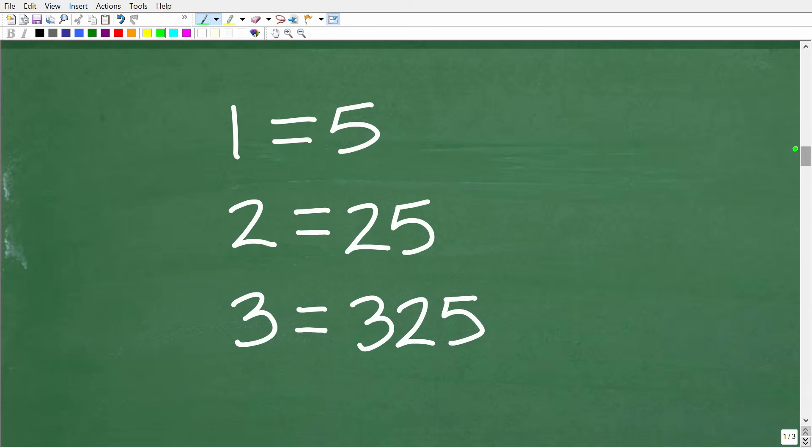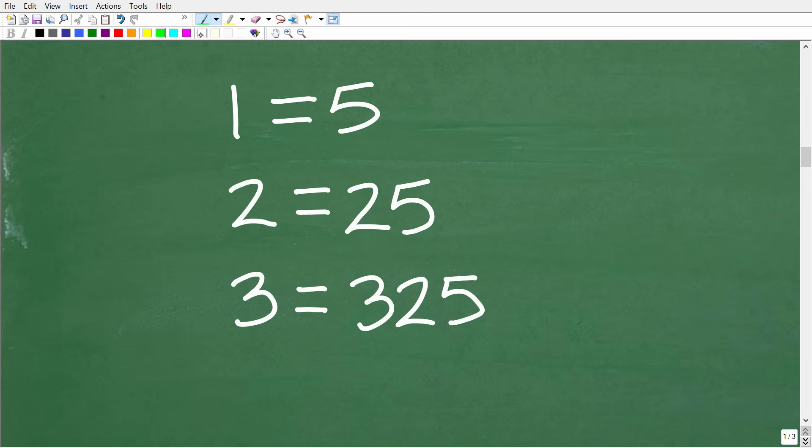All right, so here are our numbers. 1 is equal to 5, 2 is equal to 25, 3 is equal to 325. If I asked you, okay, so given this pattern, what do you think 4 is going to be equal to? All right, so if you think you know the answer to that question, go ahead and put that into the comment section. But let's go ahead and finish up this problem.